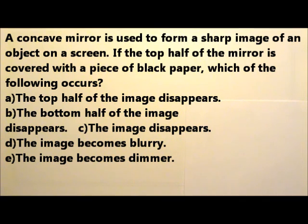A. The top half of the image disappears. B. The bottom half of the image disappears. C. The image disappears. D. The image becomes blurry. E. The image becomes dimmer.